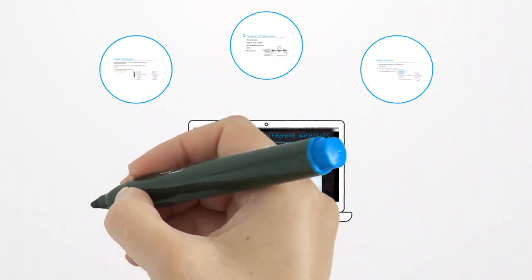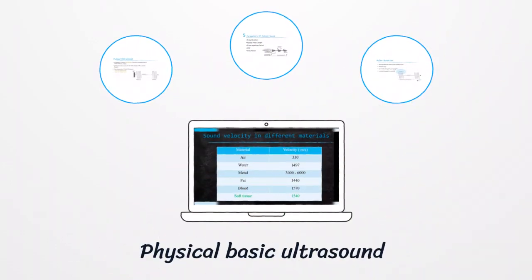Sound velocity will be different depending on the tissues. It will be materials like air, water, fats, muscle, or blood.